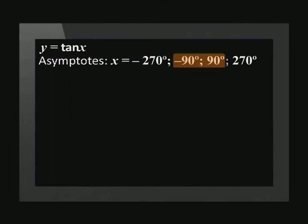We'll start by listing the asymptotes and coordinates for the standard tan function y = tan(x). The asymptotes are ±90° and ±270°.